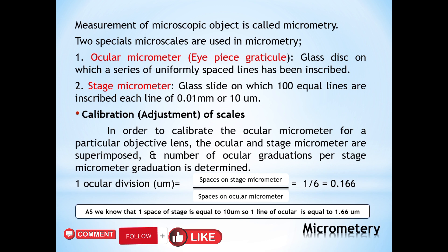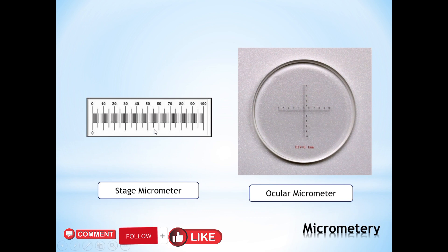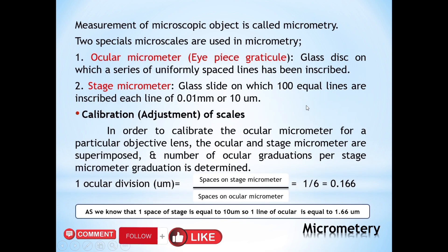There are two types of micrometers used in micrometry. The stage micrometer is placed on the stage of the microscope. The ocular micrometer, also known as the eyepiece graticule, is made of a glass disk and is placed within the eyepiece of the microscope.